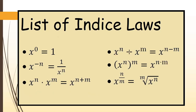Next rule: x to the power n divided by x to the power m equals x to the power n minus m. For example, 3 to the power 4 divided by 3 to the power 1 equals 3 to the power 3, because 4 minus 1 equals 3. Another example: 5 squared divided by 5 to the power 1 equals 5 to the power 1, because 2 minus 1 equals 1.